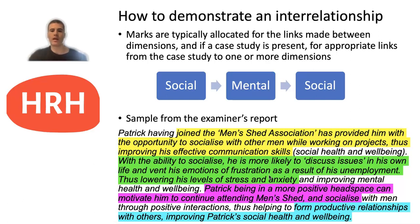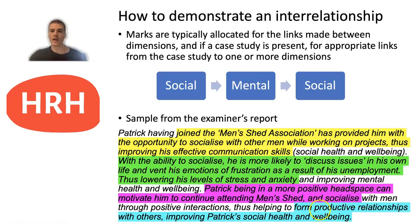After that, there's a link back from mental to social: his positive headspace, with lowered stress and anxiety from venting frustrations, can motivate him to continue attending Men's Shed and socialise. The student also added a different example of social health — forming productive relationships with others — which links back to the case study and could earn another mark. So a couple of marks go to links between dimensions, and a couple to links from the case study to the dimensions.